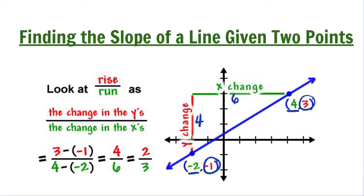Or you can do 3 minus negative 1 for the change in y, which is 4. And for the x, 4 minus negative 2, that is 6. So the change in y is 4, the change in x is 6, and in simplest fraction, that is 2 thirds. So the slope of this line is 2 thirds.